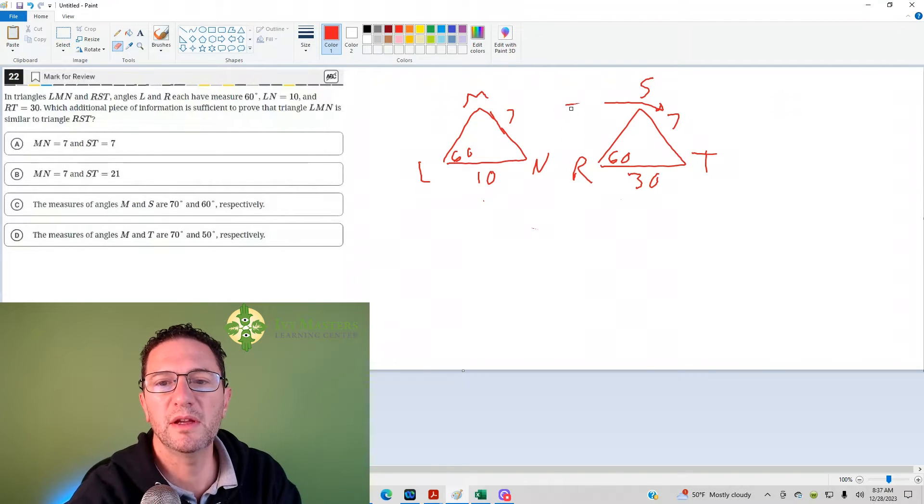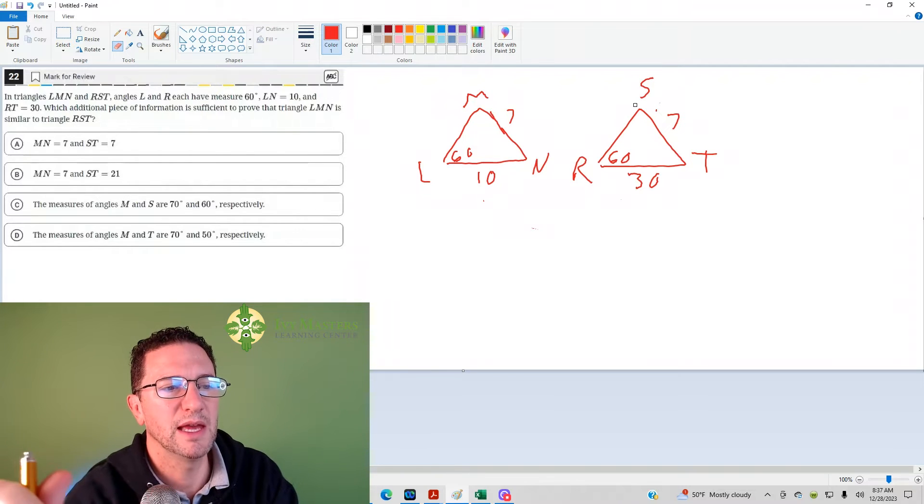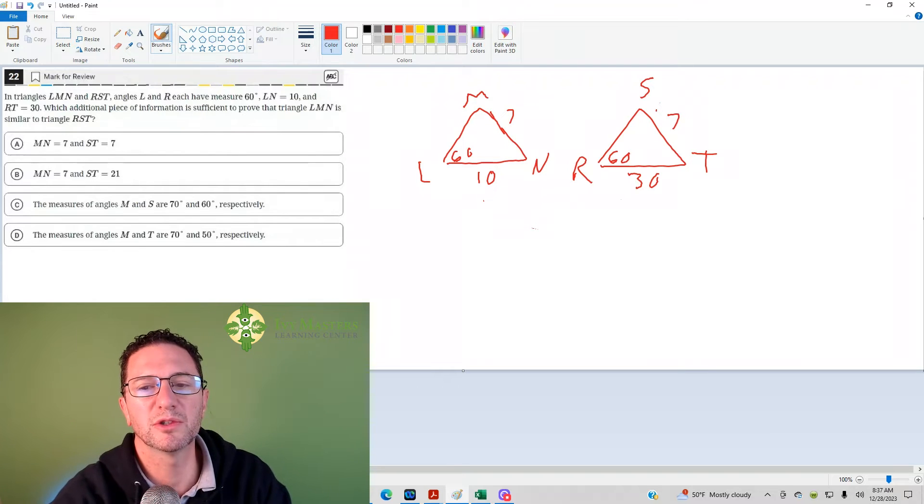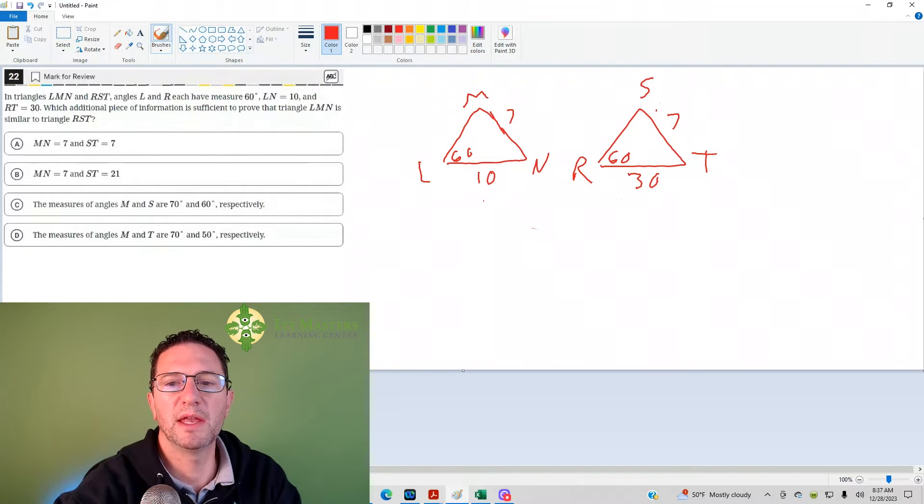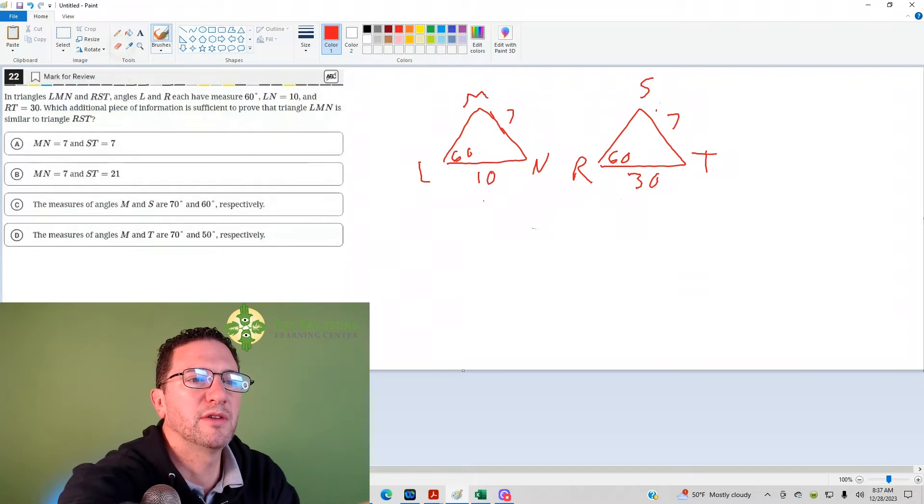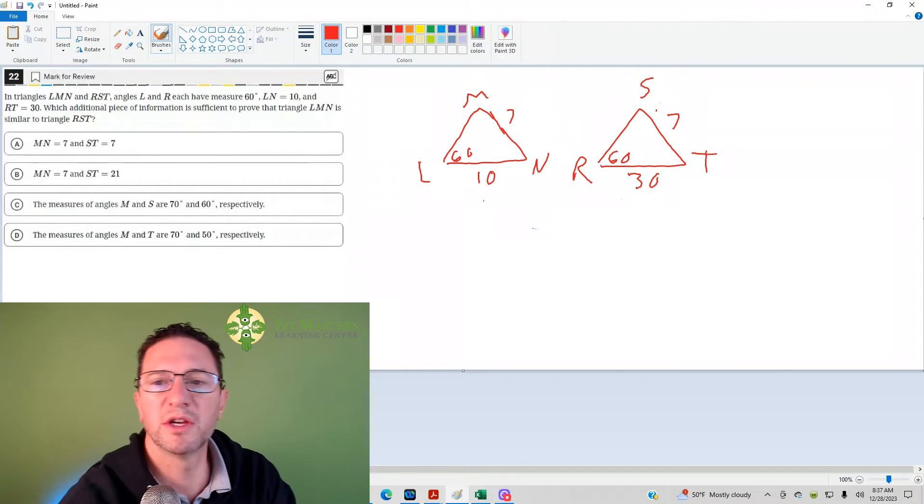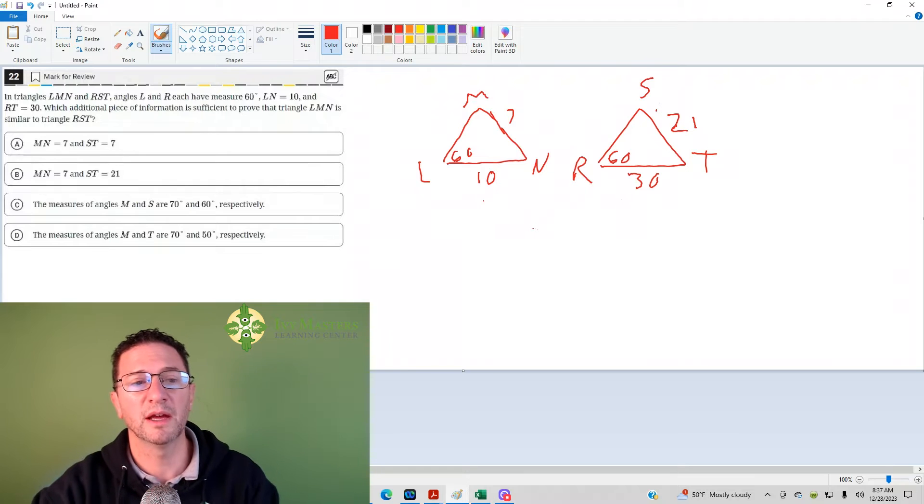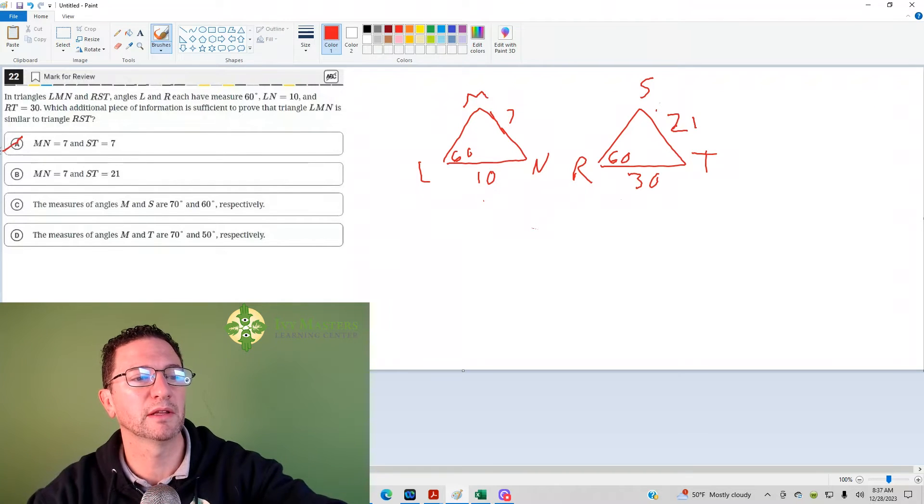Okay. And then we look at the next answer choice, answer choice B. MN equals seven and ST equals twenty-one. So MN seven - we already have that labeled as seven. ST, we're going to just change this to twenty-one. Well, that would still have the scale factor of three. So you might leave that at least for now. We'll talk about that later in a second.